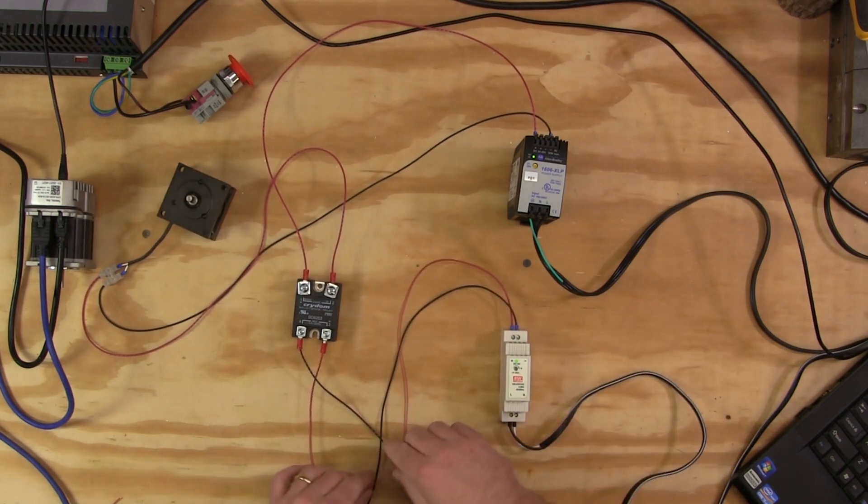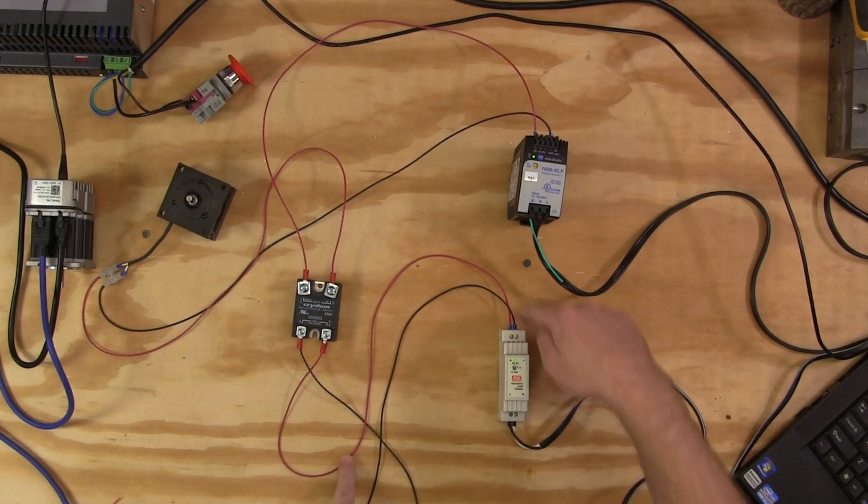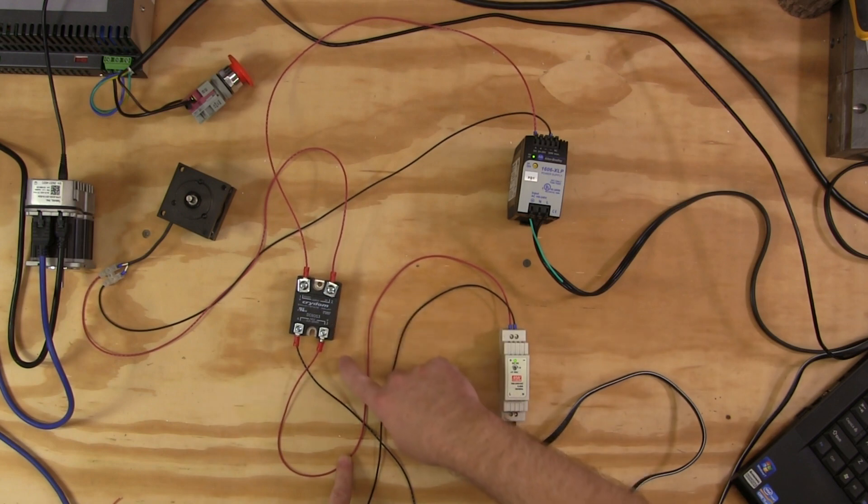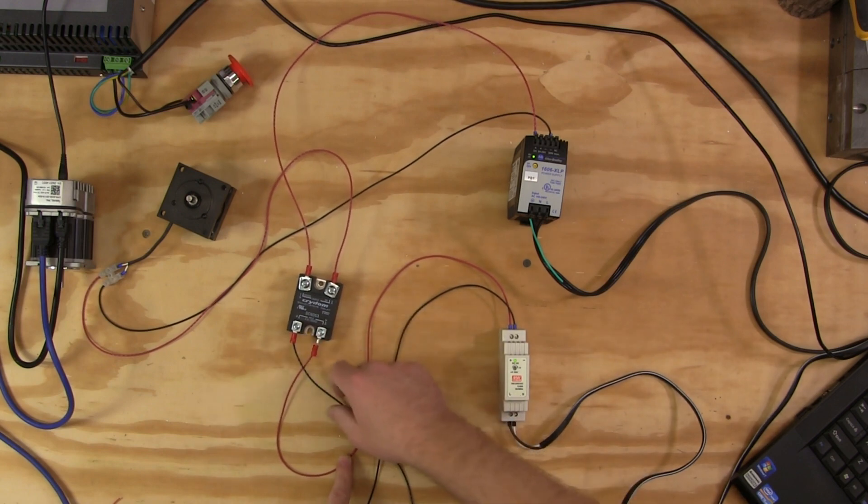So we've got positive 5 volts coming out of this 5 volt DC power supply. It goes to the positive leg of the input side which is position three on this particular relay. Again, this is a DC60S3 Crydom solid state relay. The other side or in this case the negative side of the relay which is position four as this relay is labeled.